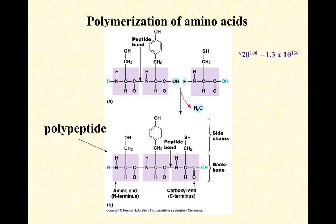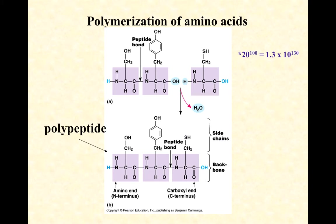You can see the repeating backbone and the variable R groups hanging off, giving unique character to each position. There are two ends: the amino terminus with a free unreacted amino group, and the carboxyl terminus with a free unreacted carboxyl group. New amino acids are attached at the carboxyl end at the ribosome, so the molecule grows from its N-terminus to its C-terminus prior to folding.